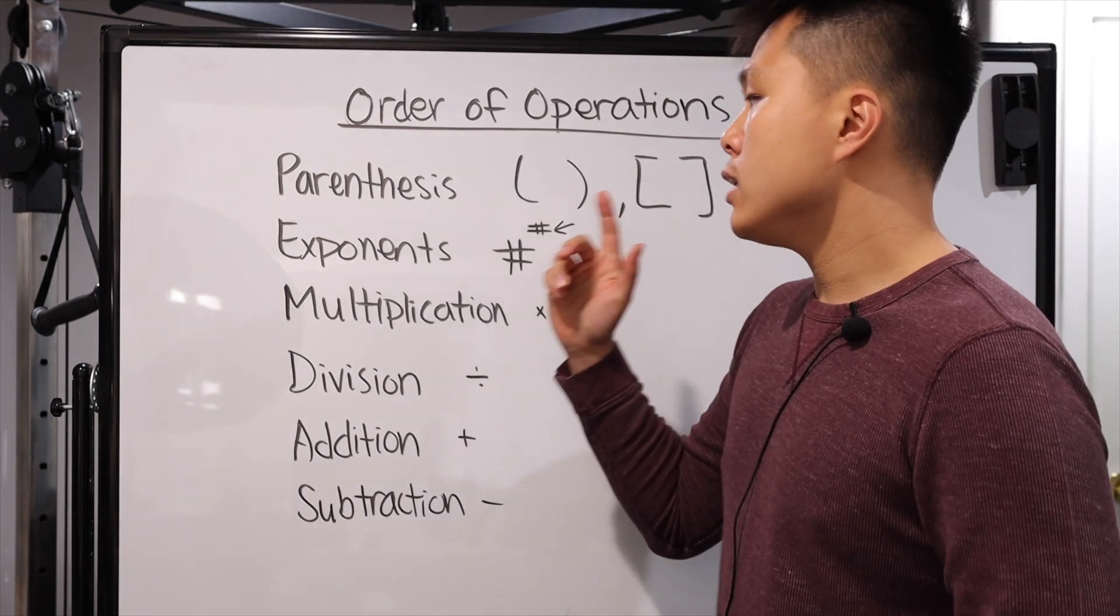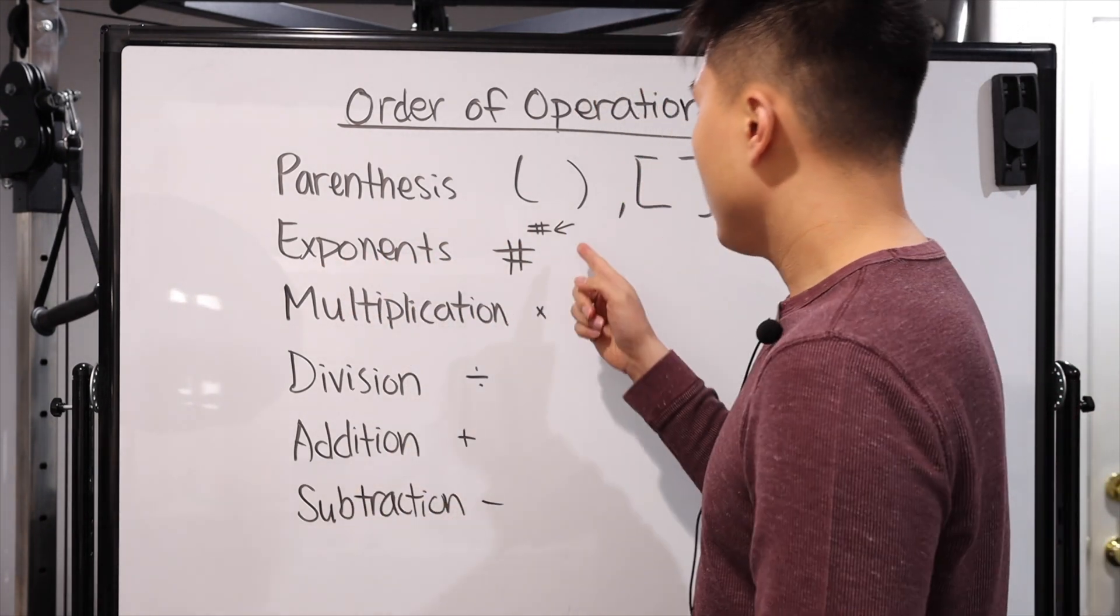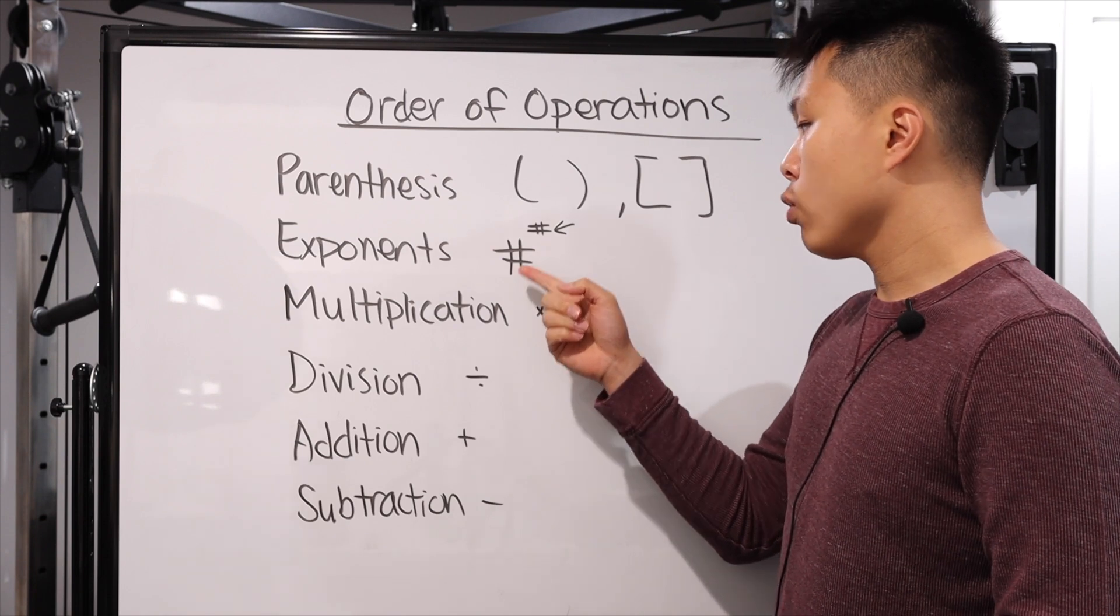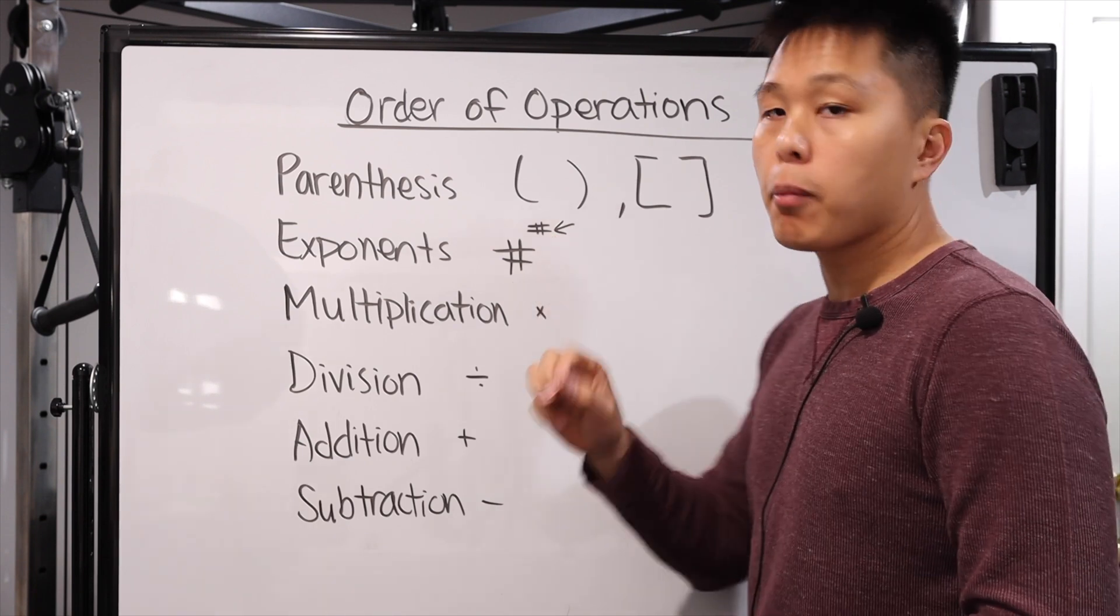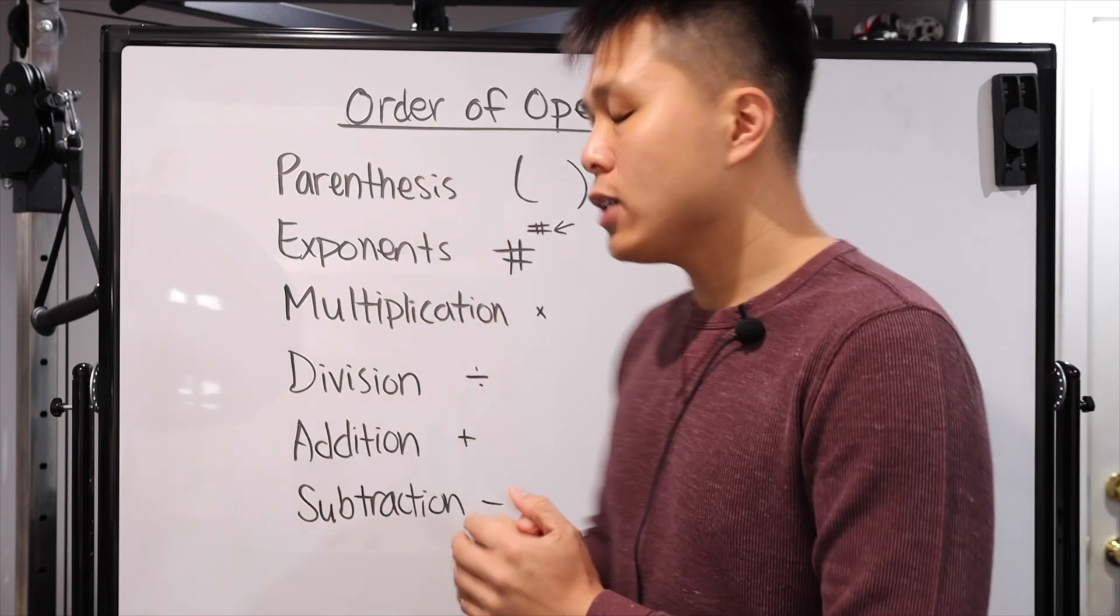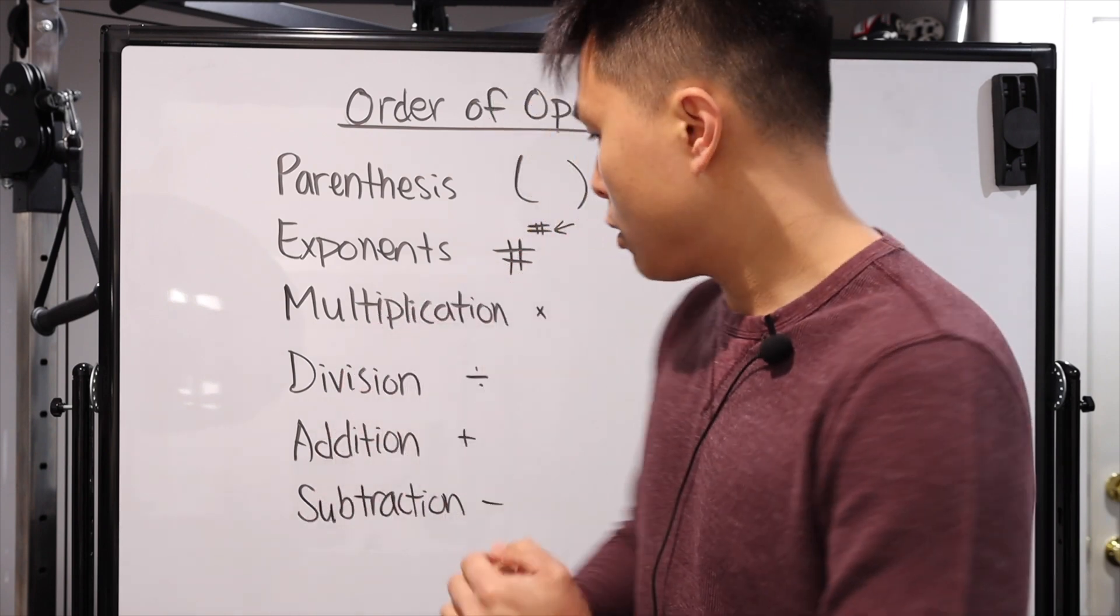The next one is you solve all the exponents if possible. Exponents are the numbers or variables with the little numbers on top. Then you do multiplication, division, addition, and subtraction.